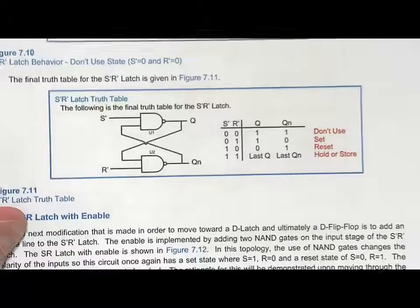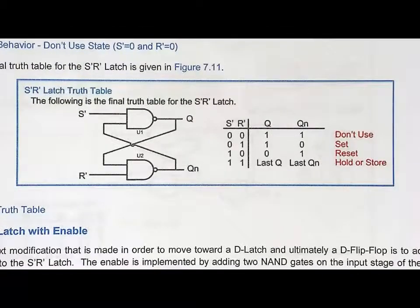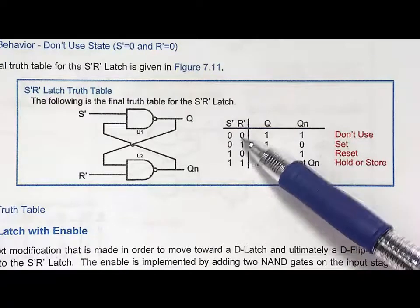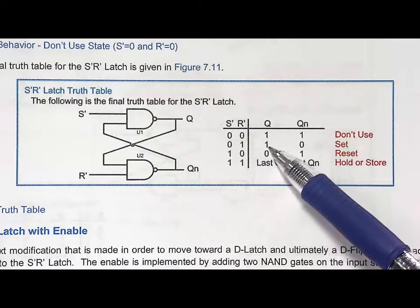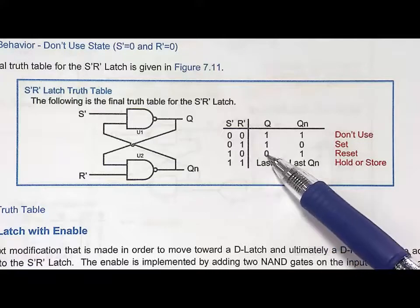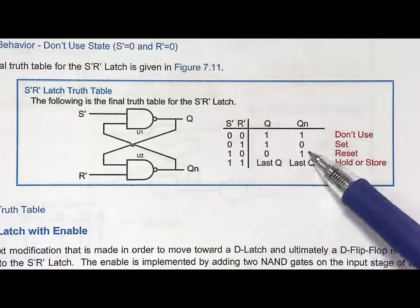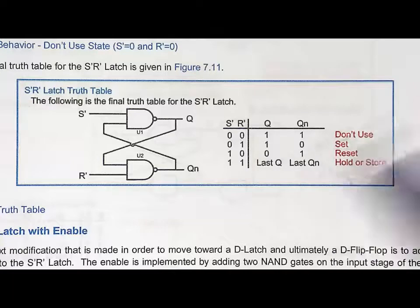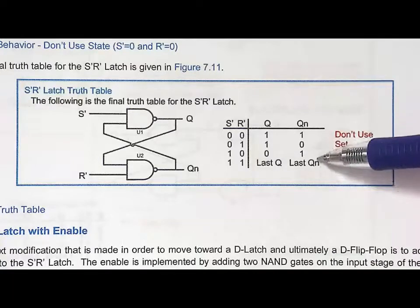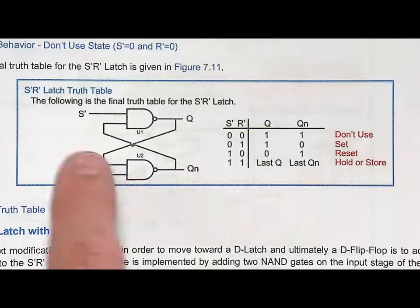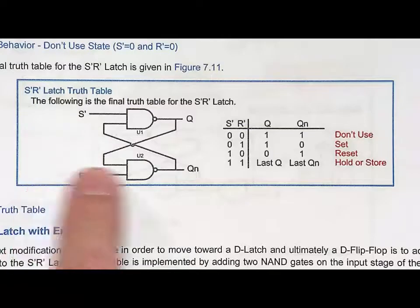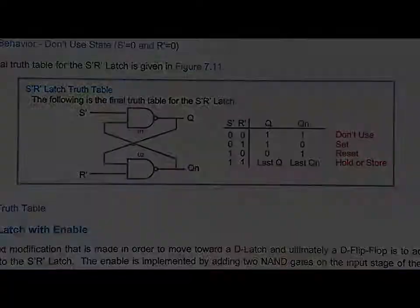To summarize the S̄R̄ latch: the don't-use state is when both inputs are 0. When both inputs are 1, you store. When S̄=0, you set. When R̄=0, you clear. For the three valid states, QN is always the complement of Q. The whole reason we built this was to invert the polarities of the inputs while achieving the same storage behavior. That's the S̄R̄ latch.